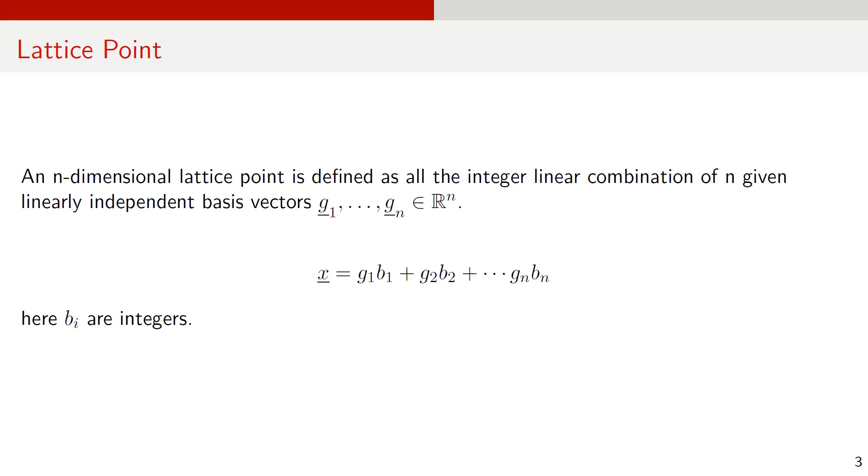Now, let's discuss how a lattice point is defined. In a more precise definition, a lattice point is defined using basis vectors. An n-dimensional lattice point is the integer linear combination of n linearly independent basis vectors, denoted here as g sub 1, g sub 2, up to g sub n. Any lattice point x is g sub 1 times b sub 1 plus g sub 2 times b sub 2 added up to g sub n times b sub n, where b sub i are integers.